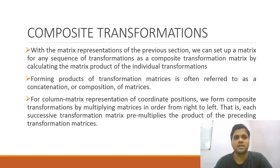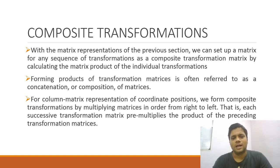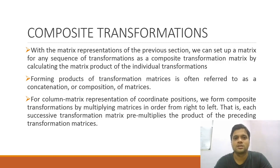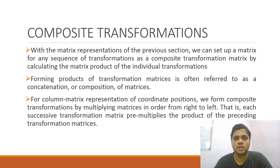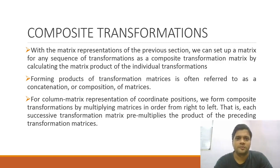We have already seen matrix representations in the previous sections, where we understood the basic transformations: translation, rotation, and scaling — how an object can be translated, rotated, and scaled if we know the parameters. We have also set up the different matrices: the translation matrix, the rotation matrix, and the scaling matrix, using the homogeneous coordinate system.